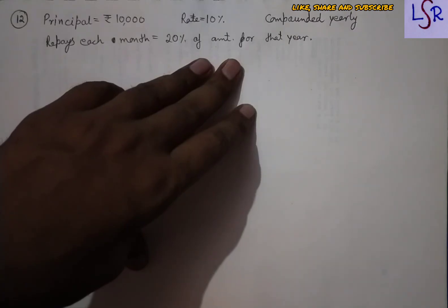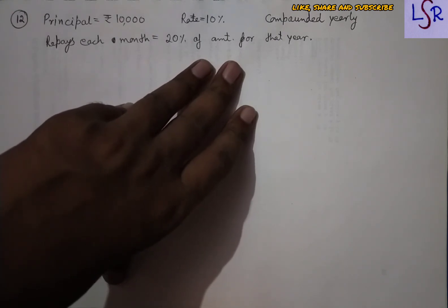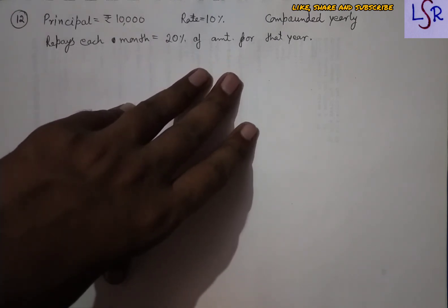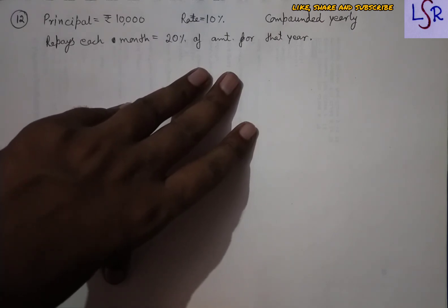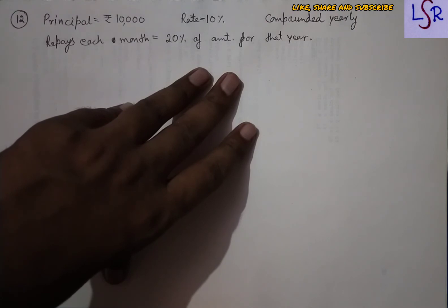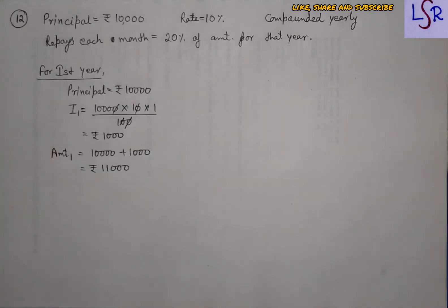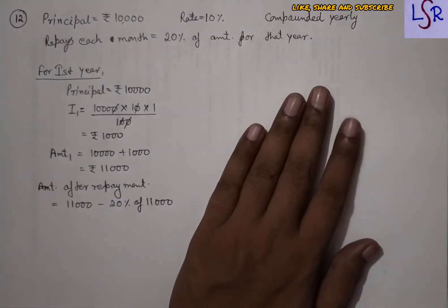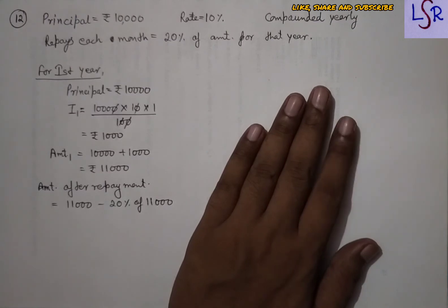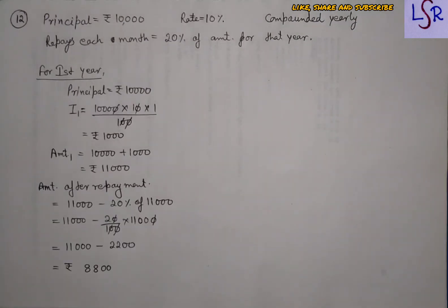In question number twelve, a man borrows rupees 10,000 at 10% compound interest compounded yearly, and at the end of each year he repays 20% of the amount for that year. For the first year: principal = 10,000, interest = 1,000, amount = 11,000. He repays 20% of 11,000, so: 11,000 − 2,200 = 8,800 remains after the first repayment.